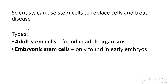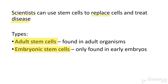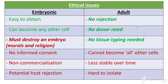So why are stem cells important? Scientists can actually use stem cells to replace cells and treat diseases. There are two main types of stem cells. Adult stem cells are found in adult organisms, usually in and amongst tissue cells, where they help replenish other cells. Embryonic stem cells are found only in early embryos, where they differentiate to become all the cells needed to create a baby. These stem cells are really useful in scientific research — they could be used to replace damaged cells and treat diseases like leukaemia. However, there are ethical issues around their use.